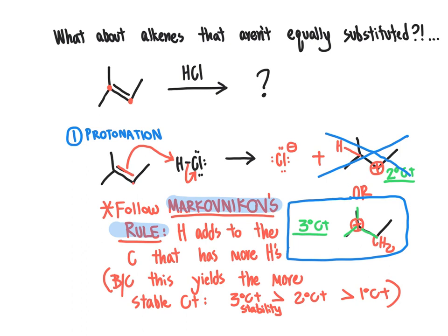The term we use to describe this selectivity for making the tertiary carbocation instead of the secondary carbocation in these addition reactions is referred to as following Markovnikov's rule. Markovnikov was a scientist who did empirical experiments using alkenes and adding various halo acids, finding that the proton always preferred to add to the carbon that had more hydrogens bonded to it to start with. The basis for why Markovnikov's rule works is that adding hydrogen to the carbon that already has more hydrogens yields the most stable carbocation — so Markovnikov's rule is essentially a rule of carbocation stability.